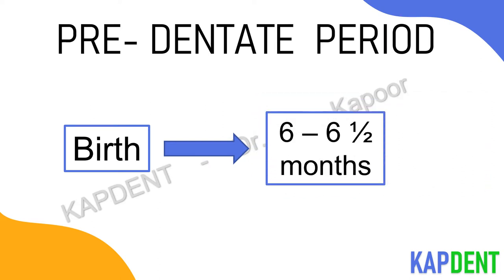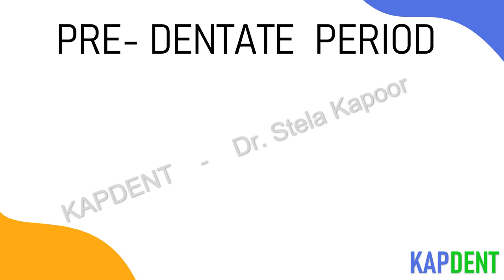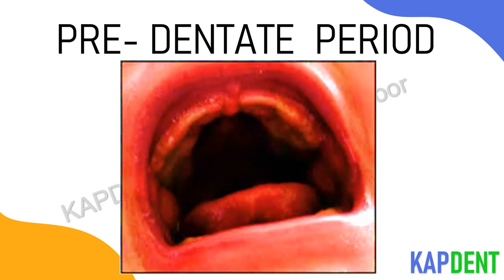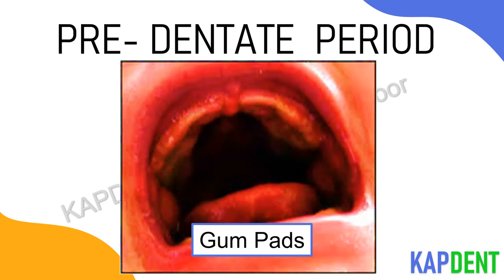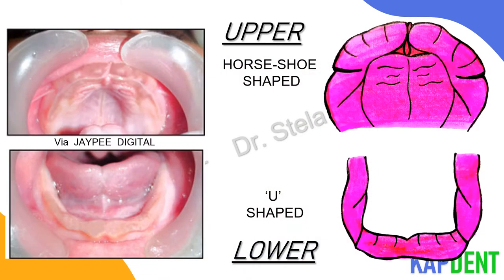In a neonate, the edentulous alveolar arches are called gum pads, which are firm pink structures. The upper gum pad is horseshoe shaped while the lower gum pad is U-shaped.